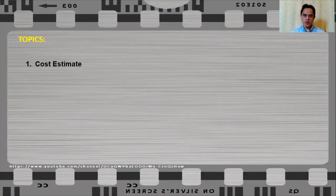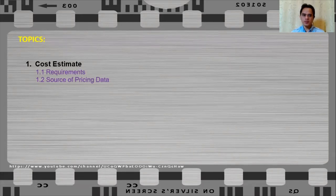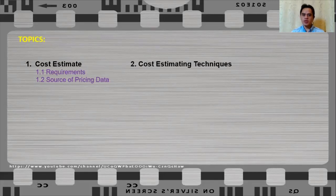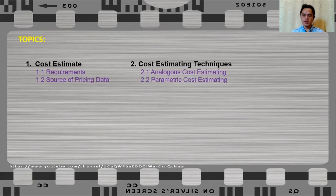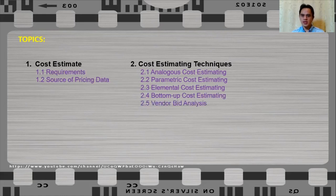The topics for this episode will be cost estimate, where we are going to discuss about the requirements needed in order for you to carry out a cost estimate and the source of pricing data. We will also talk about the techniques used in cost estimating, such as analogous cost estimating, parametric cost estimating, elemental cost estimating, bottom-up cost estimating, and vendor bid analysis. We will also talk about a budget and discuss how to prepare a project budget.